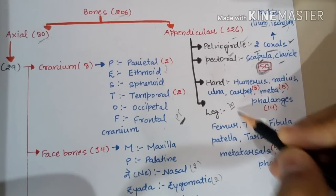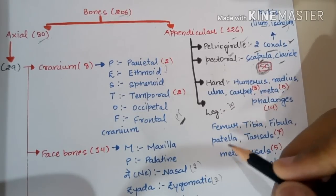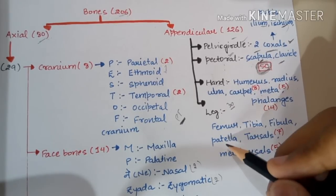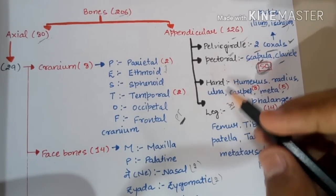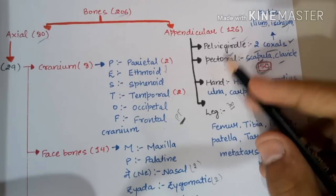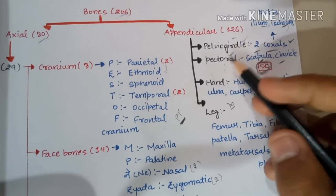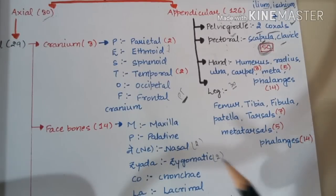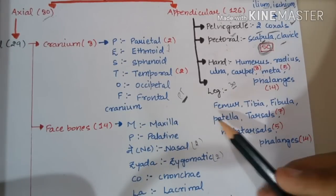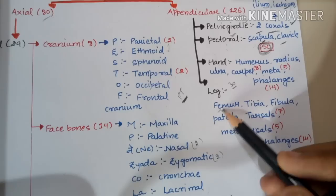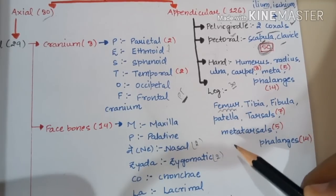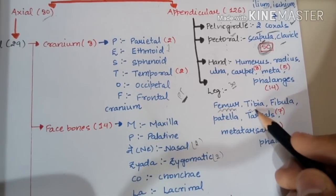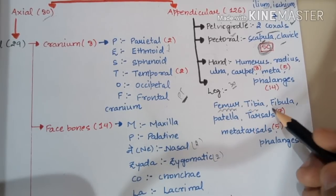Each hand has 30 bones, the other hand also 30, each leg also 30, and the other leg 30, making 120 bones in hands and legs. There are 6 bones in the pectoral and pelvic girdles combined. The largest bone in the body is the Femur in the leg. After that come Tibia and Fibula — just like Radius and Ulna in the arm.